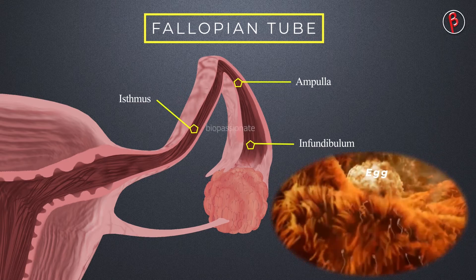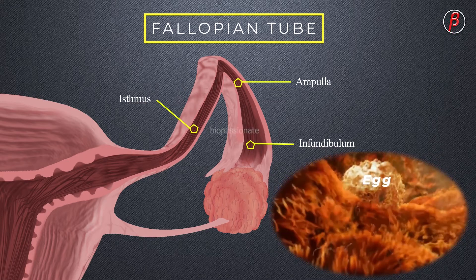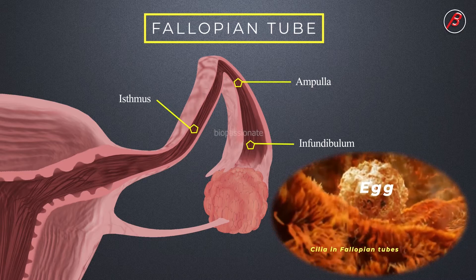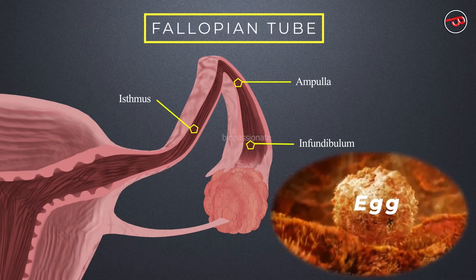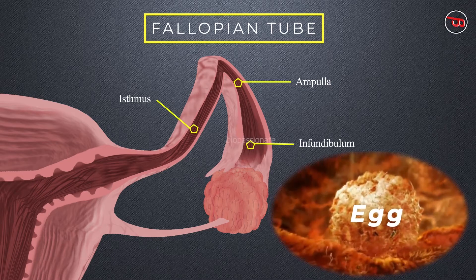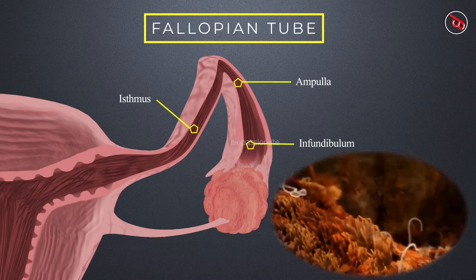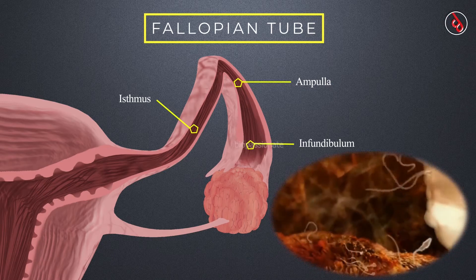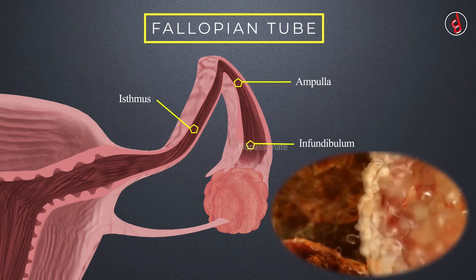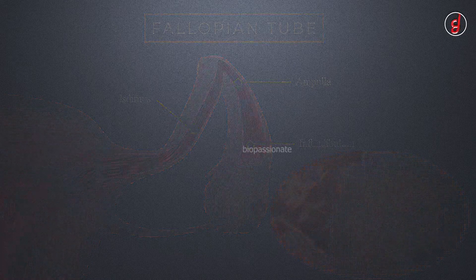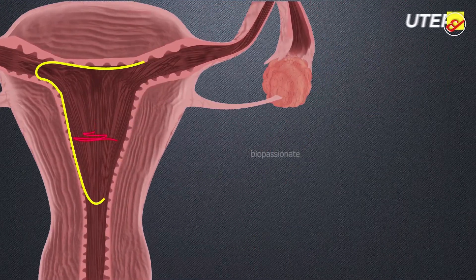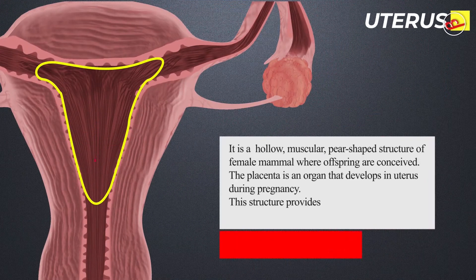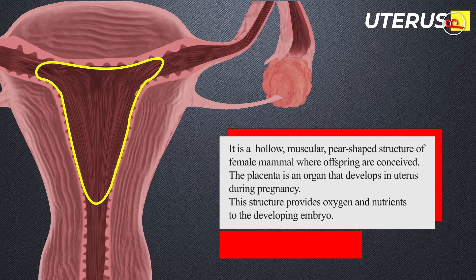The ampulla and isthmus are the thin-walled parts of the fallopian tube next to the infundibulum. Fallopian tubes have many hair-like projections called cilia, which are essential to the movement of the egg through the tube into the uterus. The uterus is a hollow, muscular, pear-shaped structure, about 7.5 cm long and 5 cm wide.